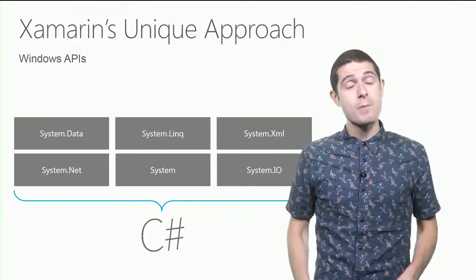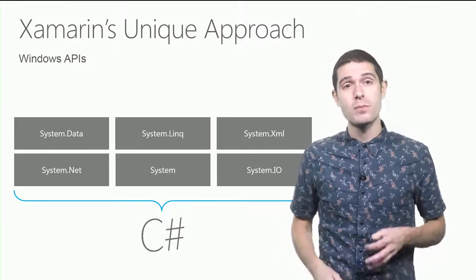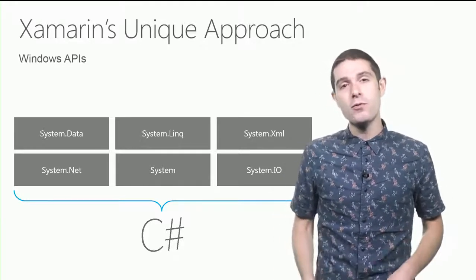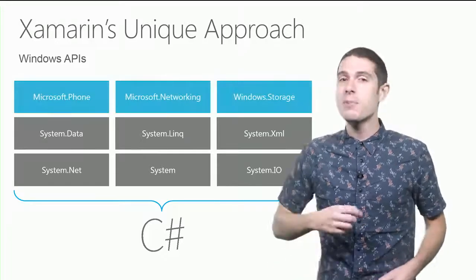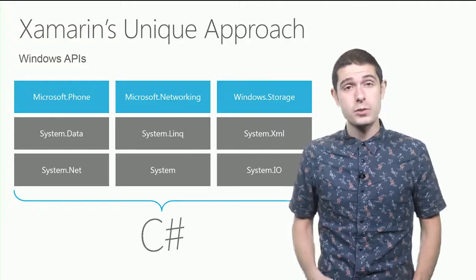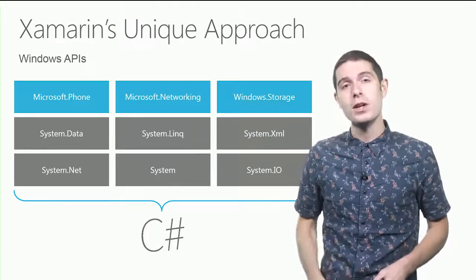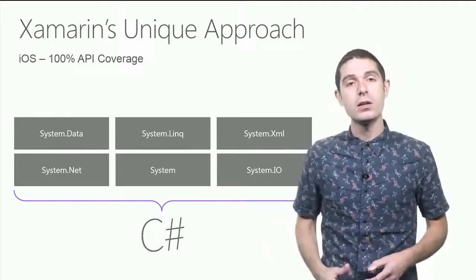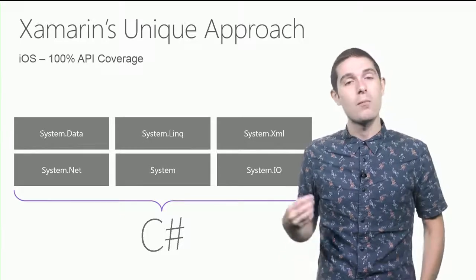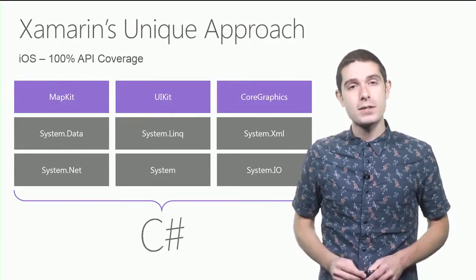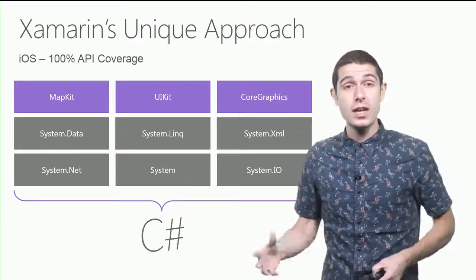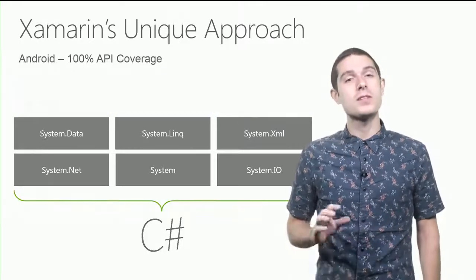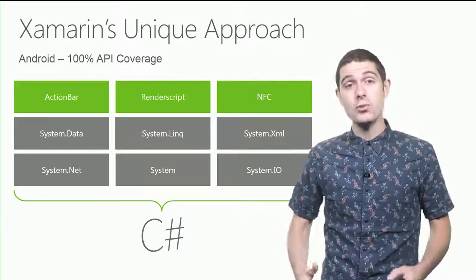Now, if you're a Windows developer today, the .NET libraries are going to look very familiar to you — System.Data, LINQ, XML, things that we know and love as .NET developers. And when you go to a new Windows platform — phone, store, desktop — you get some platform-specific APIs, like phone or storage. You think of it the same way when you use Xamarin to build iOS and Android apps. You still get all of the .NET goodness, such as data and LINQ and XML, but we give you 100% API access on both iOS and Android. And then you get to take advantage of C# features like LINQ, async/await, lambdas, delegates, events — things that we know as C# .NET developers.